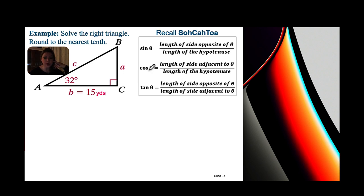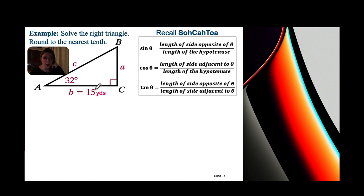Known parts of our triangle: angle A = 32 degrees, one side length = 15 yards, and the right angle = 90 degrees. We need to find lowercase a, angle B, and lowercase c. I'll find lowercase a first, setting θ = 32 degrees. Lowercase a is the side opposite θ, and the 15-yard side is adjacent to θ. Since we have opposite and adjacent, SOHCAHTOA tells us: sine is out (opposite/hypotenuse), cosine is out (adjacent/hypotenuse) — tangent uses opposite and adjacent.